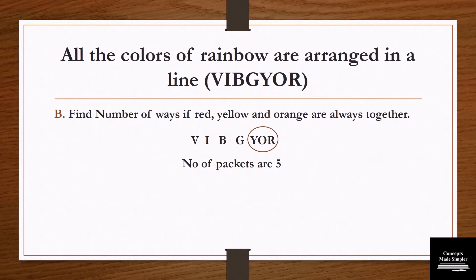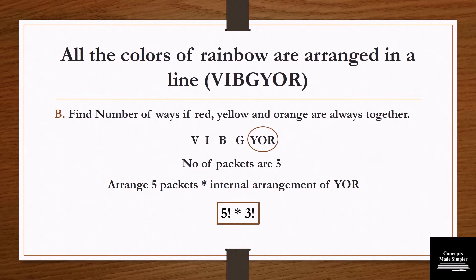How are we going to arrange them? We'll do the arrangement of 5 packets and multiply it with the internal arrangement of yellow, orange, and red. The final solution is: arrangement of 5 packets takes 5 factorial ways, and internal arrangement of yellow, orange, and red takes 3 factorial. We multiply both of them — that is the solution.